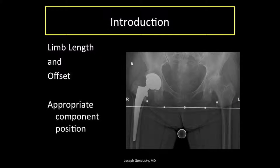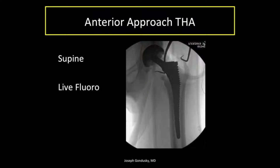The goal of hip replacement from a component position standpoint is to place parts that recreate the patient's limb length and offset, and place components in optimal geometry to aid range of motion, prevent dislocation, and provide optimal biomechanics to minimize wear. Anterior approach arthroplasty allows for supine positioning and intraoperative fluoroscopy. Real-time imaging allows verification of appropriate implant position and recreation of anatomy according to the preoperative plan.